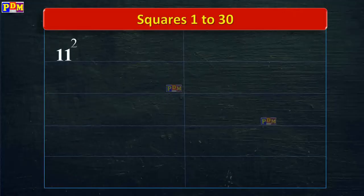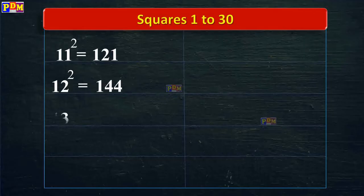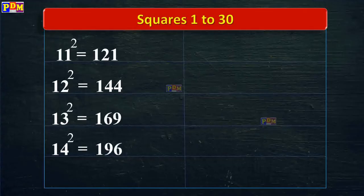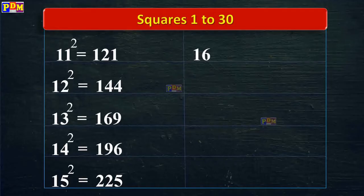11 square is equal to 121. 12 square is equal to 144. 13 square is equal to 169. 14 square is equal to 196. 15 square is equal to 225. 16 square is equal to 256. 17 square is equal to 289.